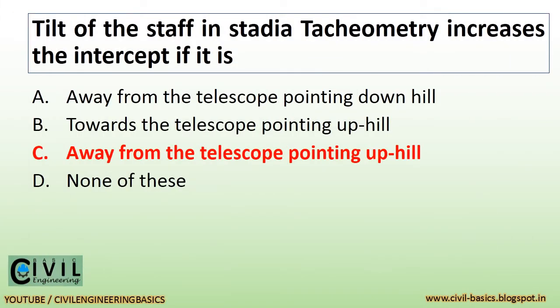Tilt of the staff in stadia tacheometry increases the intercept if it is away from the telescope pointing uphill.